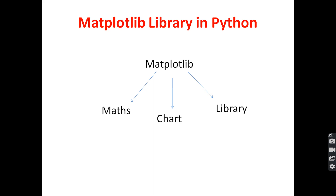There are different types of charts for visualizing data using Matplotlib library. The first one is line chart, second one is bar chart, third one is histogram, fourth one is scatter plot, fifth one is area chart, and sixth one is pie chart. By using these different types of charts, we have to visualize the data.